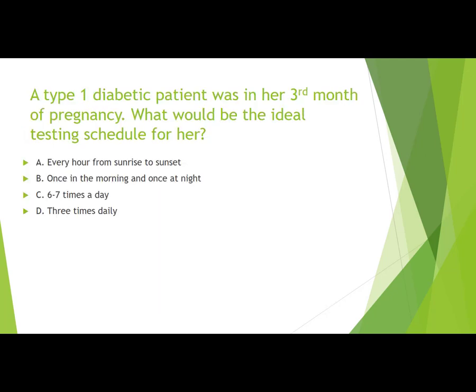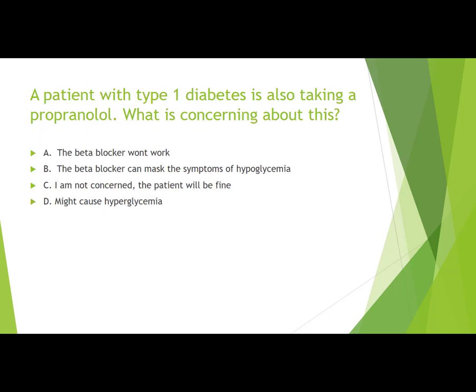Case 1: A type 1 diabetic patient in her third month of pregnancy — what is the ideal testing schedule? The answer is six to seven times a day, as per guidelines from diabetes experts, because hyperglycemia has teratogenic effects and these patients must be monitored very closely while pregnant.